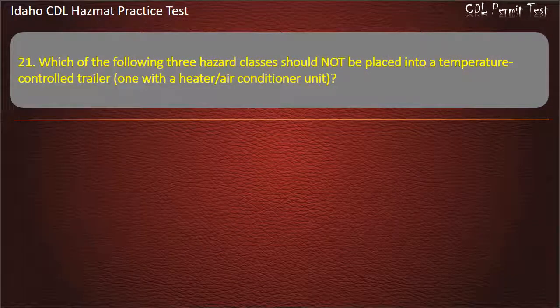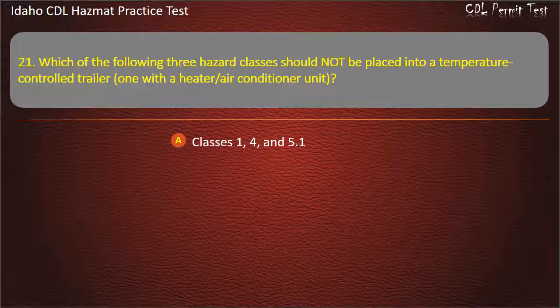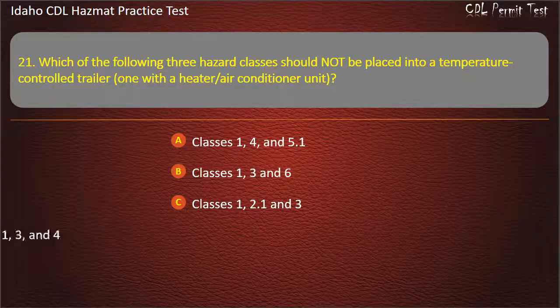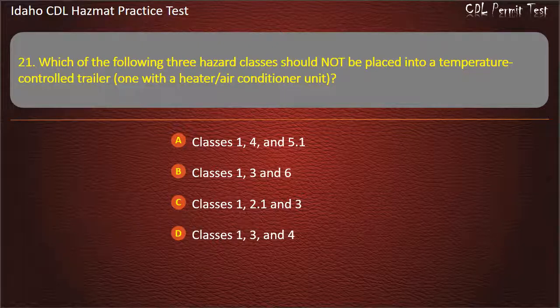Question 21. Which of the following three hazard classes should not be placed into a temperature-controlled trailer with a heater or air conditioner unit? Classes 1, 4, and 5.1. Classes 1, 3, and 6. Classes 1, 2.1, and 3. Classes 1, 3, and 4. Answer: Classes 1, 2.1, and 3.